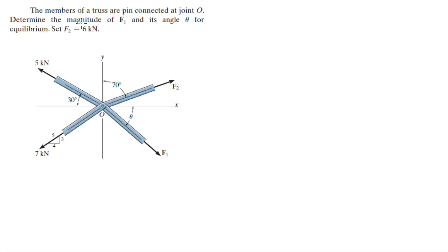Alright guys, now we're going to do this problem that says the members of a truss are connected at joint O. Determine the magnitude of F1 and its angle if F2 is equal to 6k. So, this problem is easy.